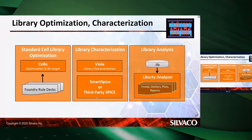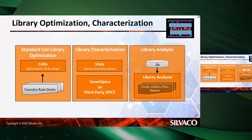The library characterization and optimization tools are the products being developed here in Brazil. These include: Cello, a layout creation, migration, and optimization platform; Viola, the standard cell and IO library characterization solution; and Liberty Analyzer, a tool for library visualization, comparison, and analysis. As part of Silvaco's IP portfolio, foundation IPs — standard cell libraries developed by the Brazil team — are also commercialized as IP products.